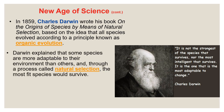One of the most famous — or infamous — scientists of this period is really known more as a biologist. In 1859, Charles Darwin wrote On the Origin of Species by Means of Natural Selection. This book was based on the idea that all species evolved according to a principle known as organic evolution. Darwin explained that some species were more adaptable to their environment than others, and through a process called natural selection, the most fit of those species would outlive those that were not as fit. They developed genetic variants that allowed them to survive, while other members of the species without those variants would die out.